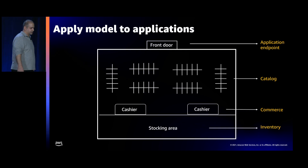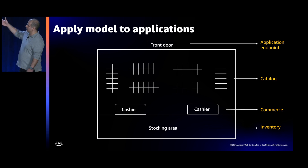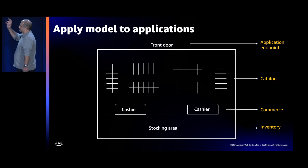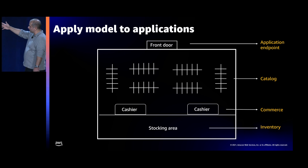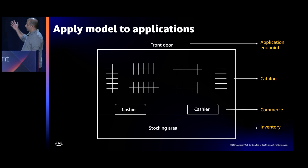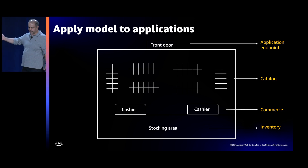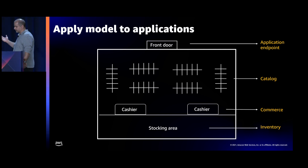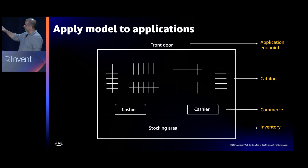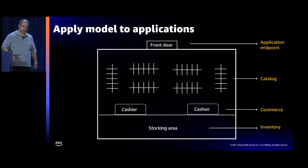Let's map the different store functions to how they would look in an application. I have an application endpoint — that's where consumers come, whether it's a customer or another application making a request. Different customers come to that endpoint and make purchases. The shelves area I'm expanding — think of that as my catalog, where I have all my different offerings. Customers can browse; not all of them will make a transaction. Some will come in and browse different products, like different unicorn stuffed toys, and then some will transact, which maps to a commerce piece. And there's also inventory.